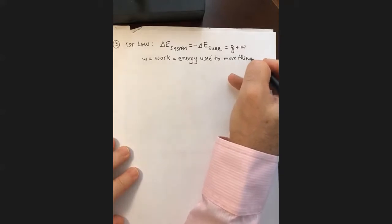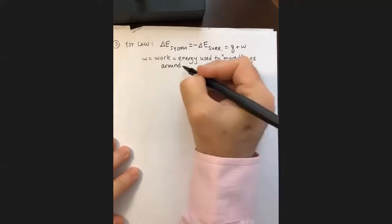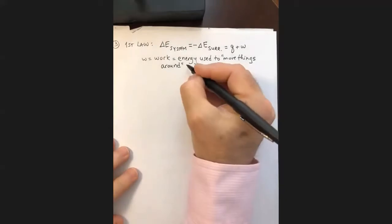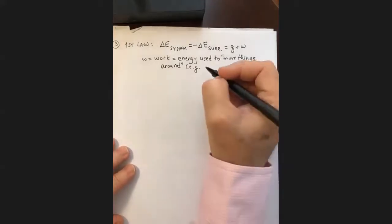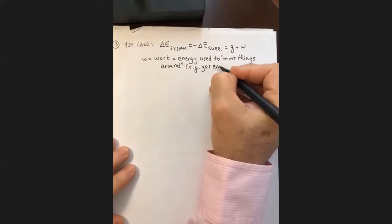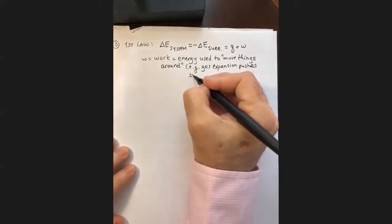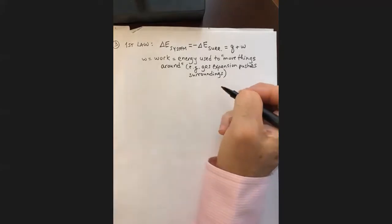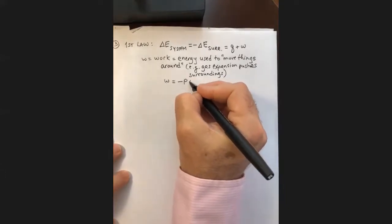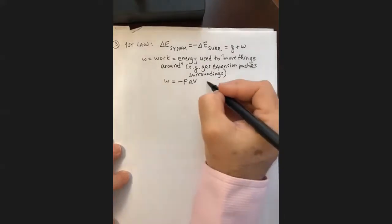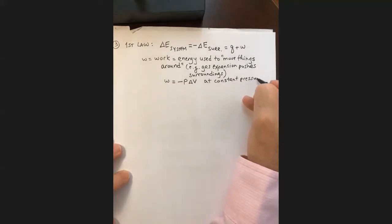Work is the energy required or used to move things around. For example, if you have a reaction that produces a gas, the gas expands and pushes the surroundings out of the way — gas expansion pushes surroundings. We're going to simplify and say that for any process, work equals −PΔV — the change in volume times the pressure — measured at constant pressure, because most chemical reactions we study are carried out at constant pressure in an open container.